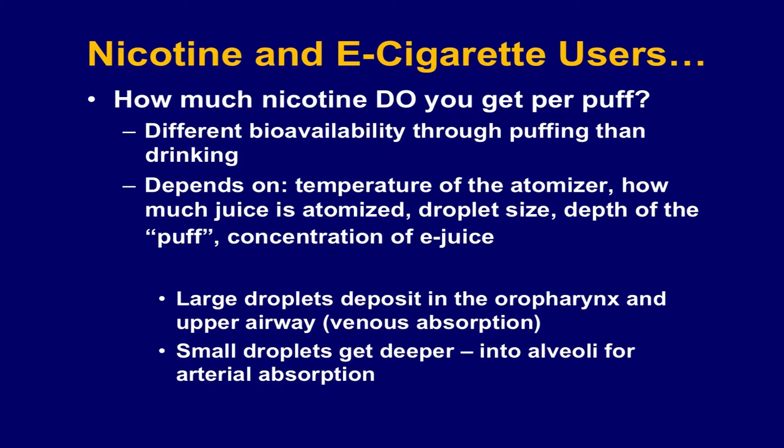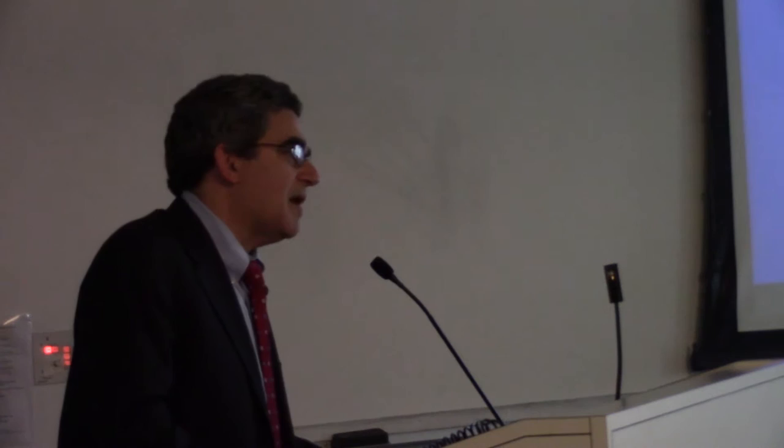How much nicotine do you get when you smoke one of these things? There's different bioavailability. It depends on the temperature, how much juice is atomized, the droplet size, the depth of venous absorption from deposits in the oropharynx and upper airway. You get small droplets deep into the lungs for the same kind of absorption from combustible cigarettes. The later generations of e-cigarette devices are better at delivering small droplets deeper into the lungs.